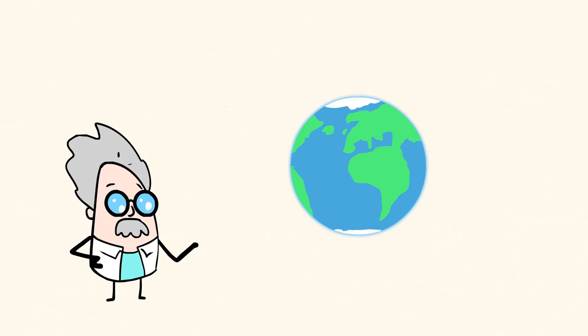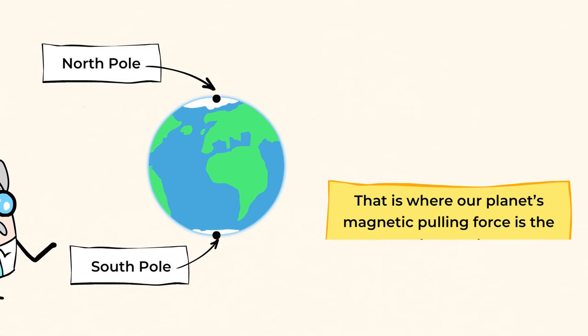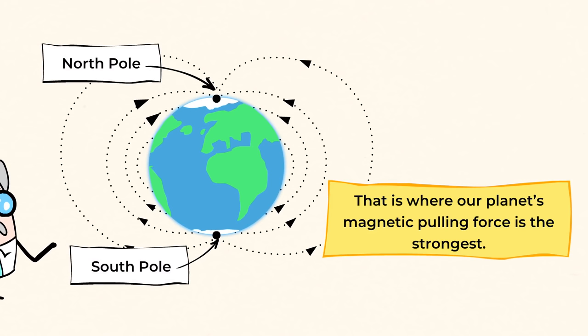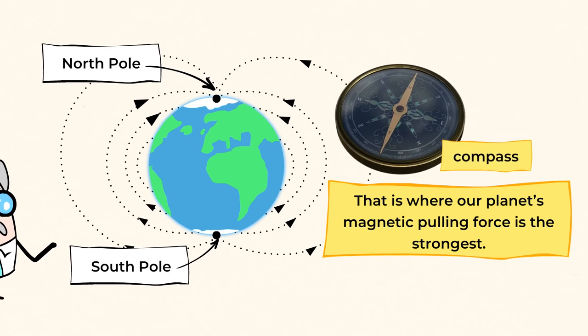If you go near Earth's geographical north and south pole, that's where our planet's magnetic pulling force is the strongest. And that's why a compass needle is always attracted to Earth's north pole. It acts like a rotating magnet that points to the north all the time.